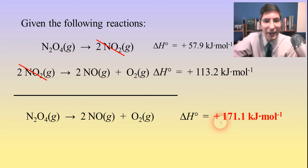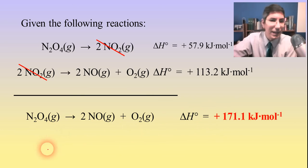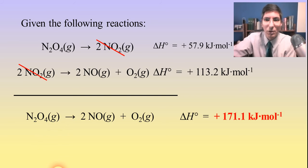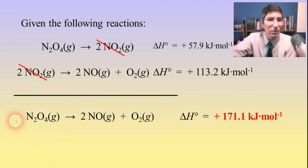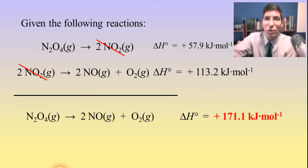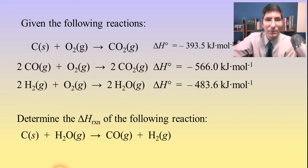Adding up the individual delta H's gives an overall delta H of positive 171.1 kilojoules per mole. This is an endothermic reaction — positive 171.1 kilojoules are absorbed to break apart one mole of N₂O₄. Let's try another example.